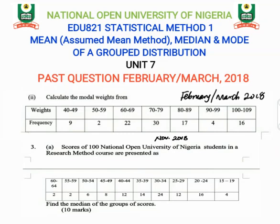Welcome to Mass Guru Educational Services. If you are studying with us on Mass Guru channel for the first time, or you have not subscribed to our channel, please kindly do so and don't forget to comment — this will help us serve you better. Today we are going to discuss the mean using the assumed mean method, median, and mode of a grouped distribution. That is Unit 7 of course material ATC 21 Statistical Methods 1. We are going to discuss this using questions taken from February/March 2018 and November 2018.